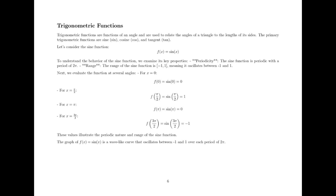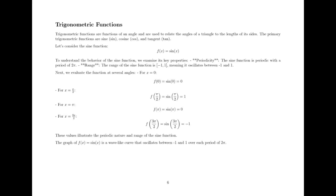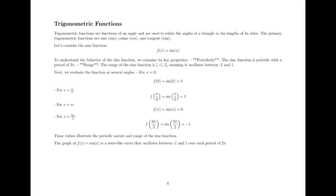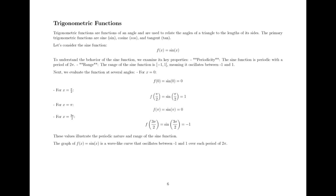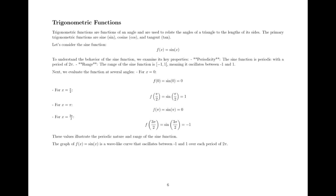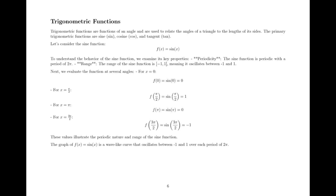Let's explore trigonometric functions. Trigonometric functions are functions of an angle and are used to relate the angles of a triangle to the lengths of its sides. The primary trigonometric functions are sine, cosine, and tangent. Let's consider the sine function, f(x) = sin(x). The sine function is periodic with a period of 2π. The range of the sine function is from -1 to 1, meaning it oscillates between -1 and 1.